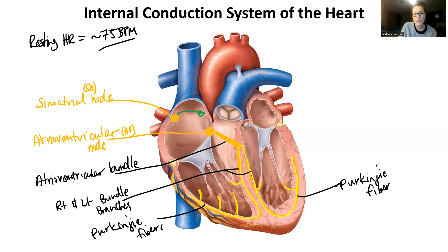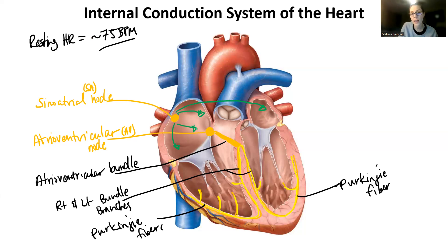The SA node is going to depolarize, and when it does, it spreads that depolarization to the myocardial layer of the atria, so the atria are going to contract. Then it sends that depolarization message to the atrioventricular node. There is a slight delay between the sinoatrial node and the atrioventricular node — specifically a slight delay in the AV node depolarizing — and that's because you need the atria to fully contract first.